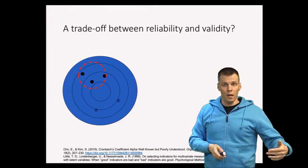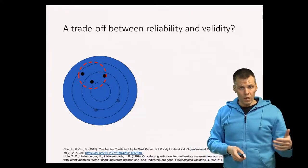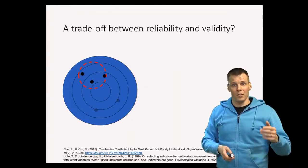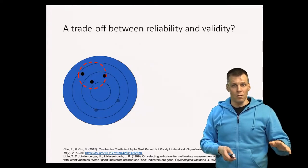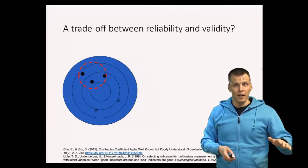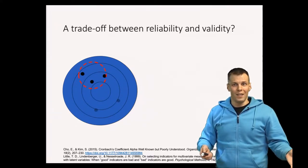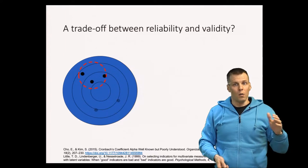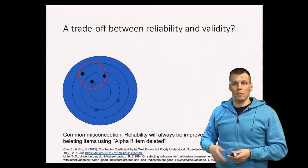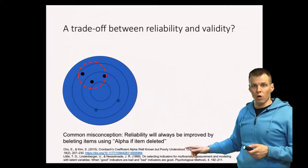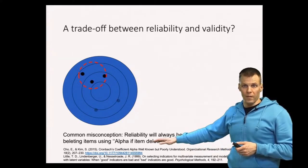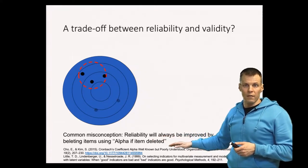When you take an indicator away from the scale, it is possible that the scale reliability increases. It is also possible that you are just throwing away valid evidence against reliability. Is ignoring evidence against the result that you want to have a good thing to do? Obviously not. This is the thing that Joe discusses in his paper when he says there is a common misconception that reliability is increased when you follow the 'alpha if item deleted' advice given by your statistical software.